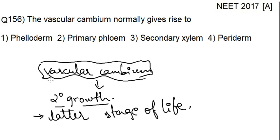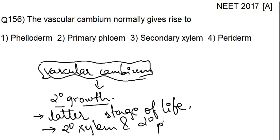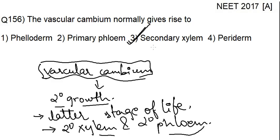What happens in secondary growth? In secondary growth, there is a formation of secondary xylem and secondary phloem. That means new vascular tissues are formed during secondary growth. So our answer is option number 3 — secondary xylem.